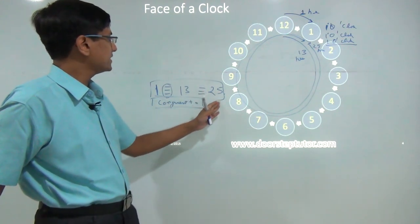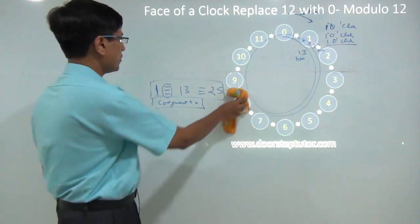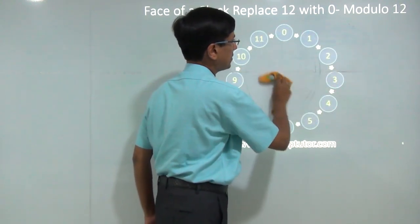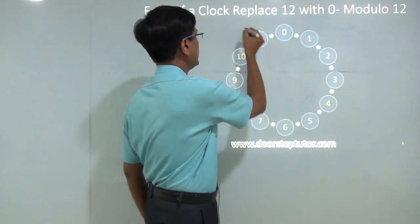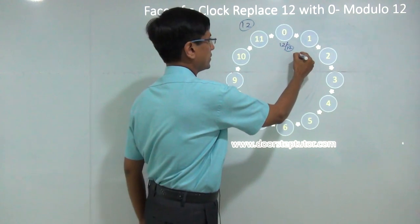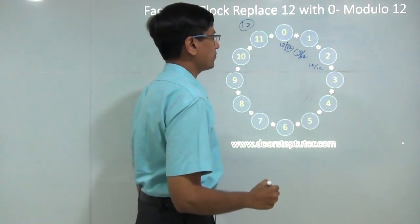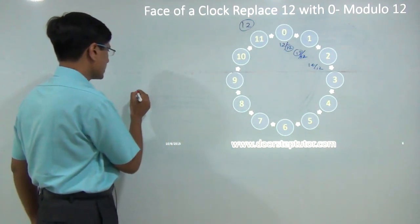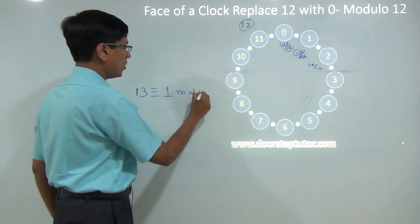Now let's define this more formally. One small change we make to the clock face is replacing 12 with 0. Now the numbers are exactly remainders of 12. So 12 divided by 12 gives remainder 0, 13 divided by 12 leaves remainder 1, 14 divided by 12 leaves remainder 2, and so on. The way we write the congruence is: 13 is congruent to 1 mod 12.